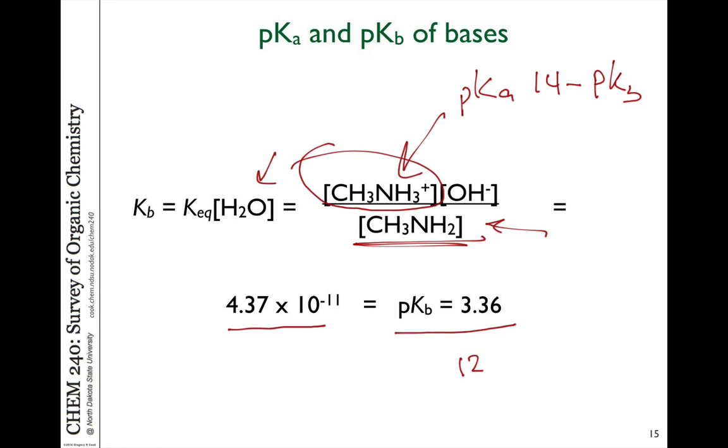So what we can say is that the protonated compound, the pKa of the protonated compound, is going to be 14 minus the pKb of the amine. So the pKa of the ammonium salt should be about 10.64, if this is the pKb, 14 minus this, which says it's a pretty strong acid relative to water. Recall that the pKa of water itself is about 16. So it is a stronger acid, this protonated ammonium, than water is.